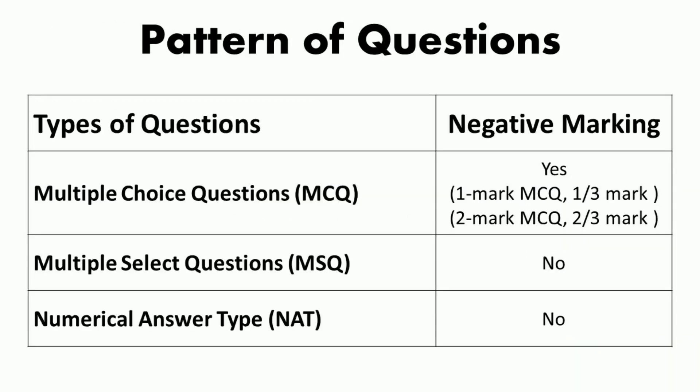The pattern of questions includes multiple choice questions (MCQs), multiple select questions (MSQs), and numerical answer type (NAT) questions. MCQs carry 1 or 2 marks each; each has 4 answer choices with only 1 correct answer. There is negative marking for wrong answers in MCQs: for a 1-mark MCQ, 1/3 mark is deducted for a wrong answer, and for a 2-mark MCQ, 2/3 mark is deducted.